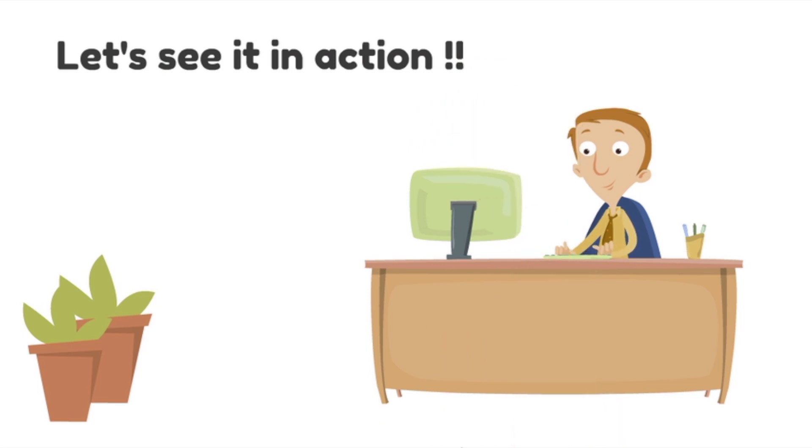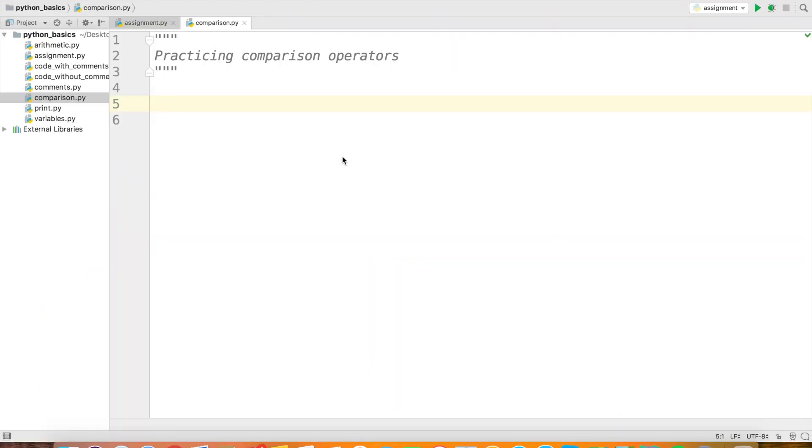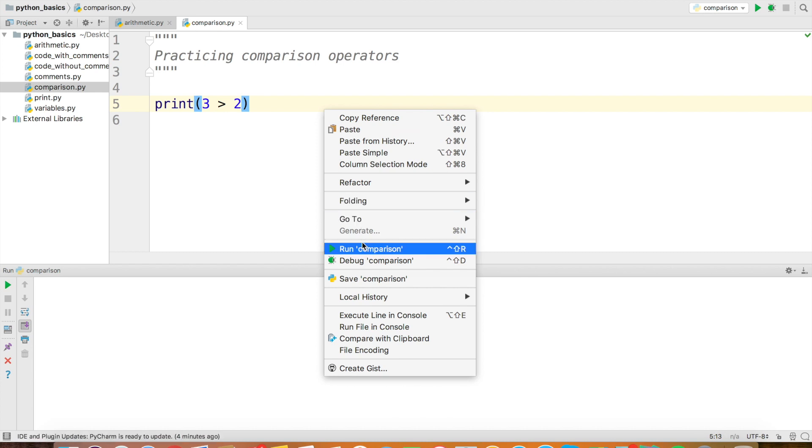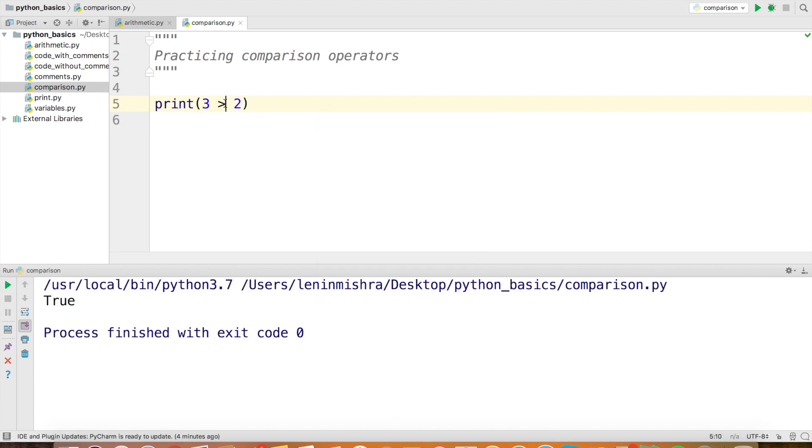Let's see it in action. Let's go ahead and talk about comparison operators. If I print 3 greater than 2, Python will return me true. However, if I print 3 less than 2, Python is going to return me false.